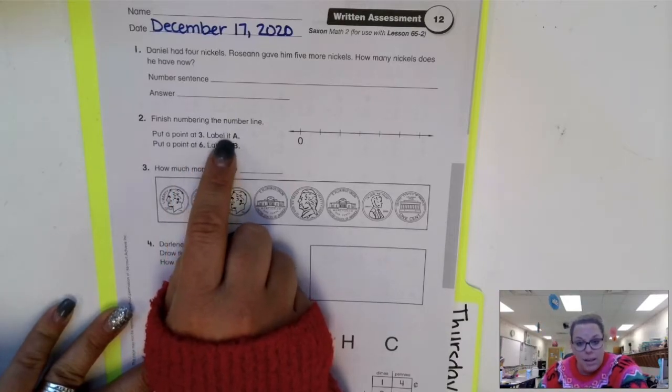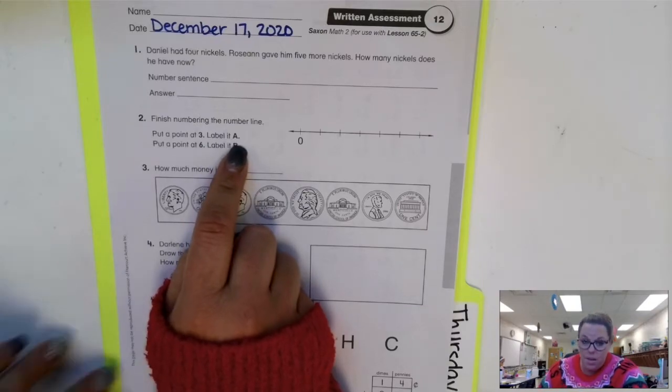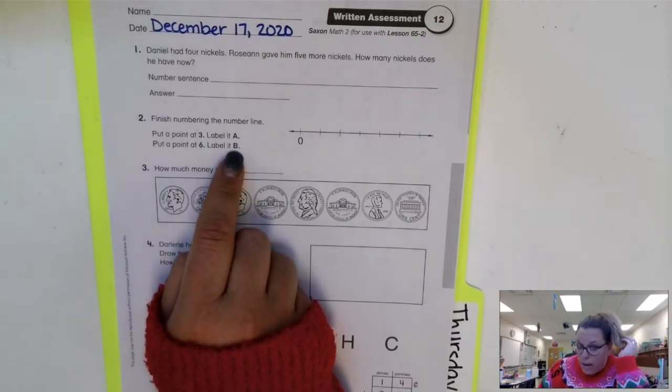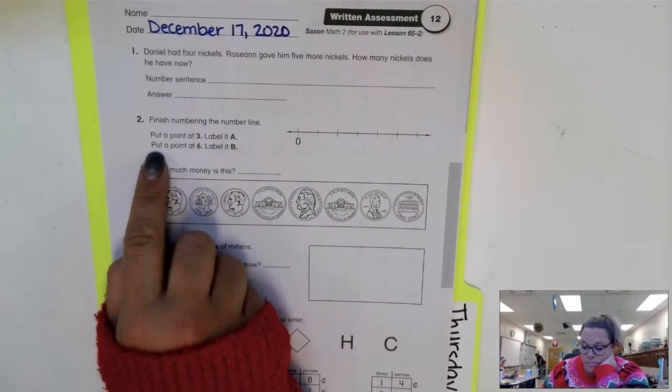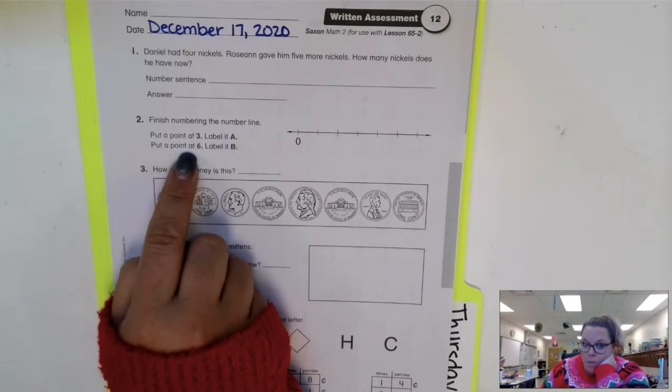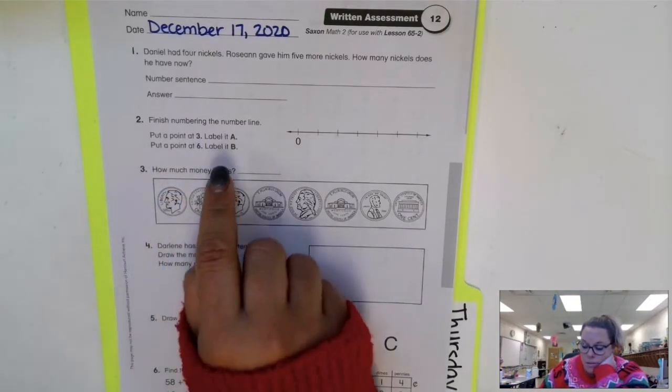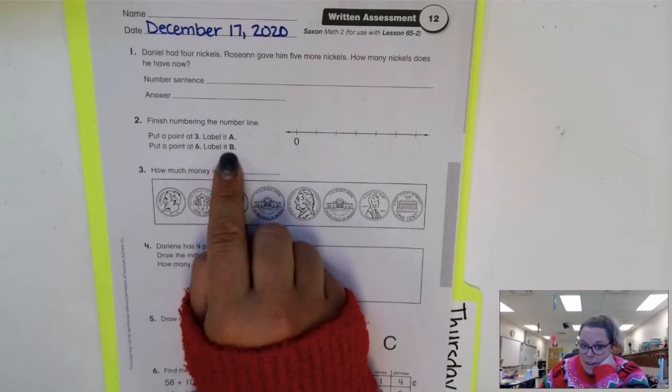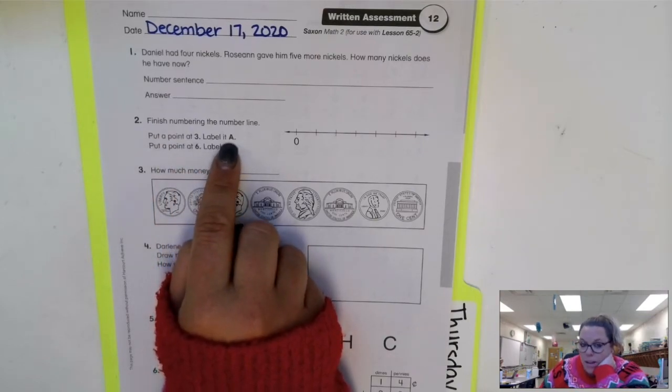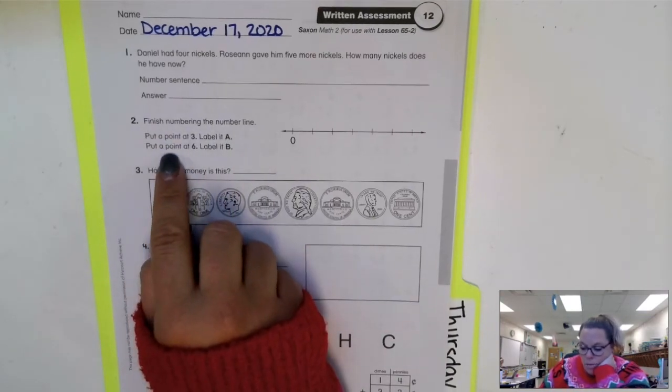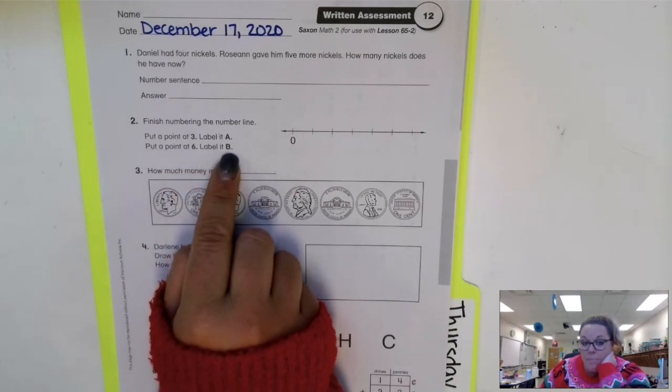And I want you to label it A. So put a point at three and label it A. Then put a point at six, label it B. So put a point at three, label it A. Put a point at six, label it B.